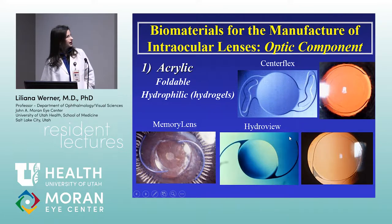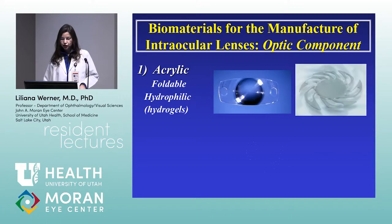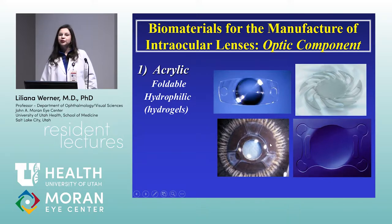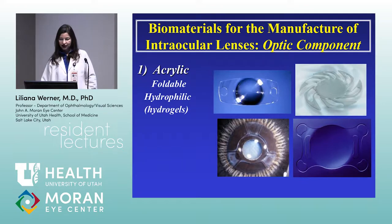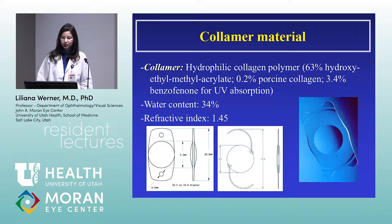Three lenses — the Centerflex, Hydroview, and Memory lens — were available in the United States. The Centerflex by Rayner is still available. There is a huge variety of hydrogel designs available in Europe; they are actually less expensive than hydrophobic acrylic lenses. In terms of hydrophilic acrylic lenses, you may have heard about Collamer material, made by STAAR here in the United States.